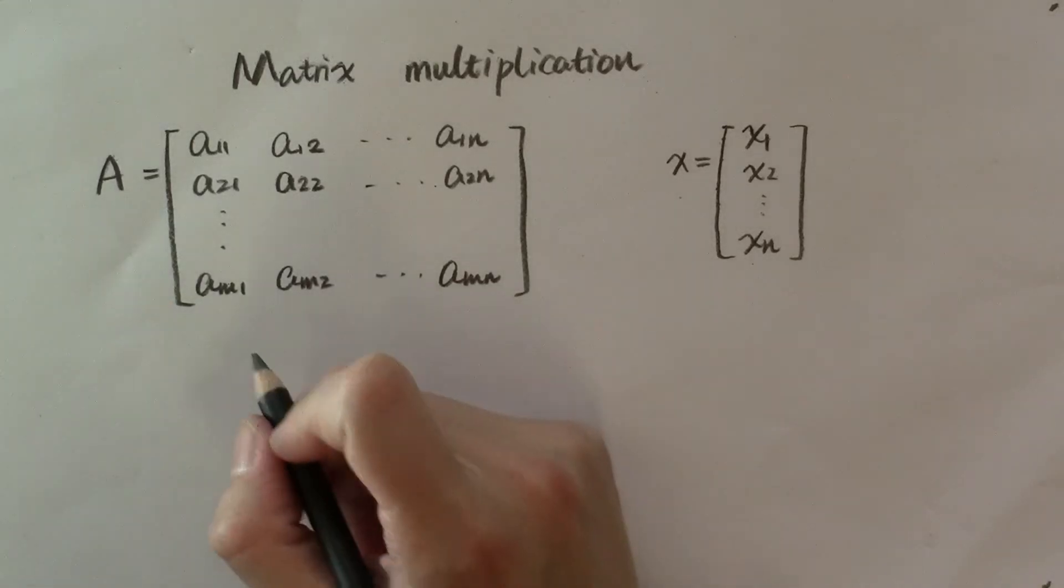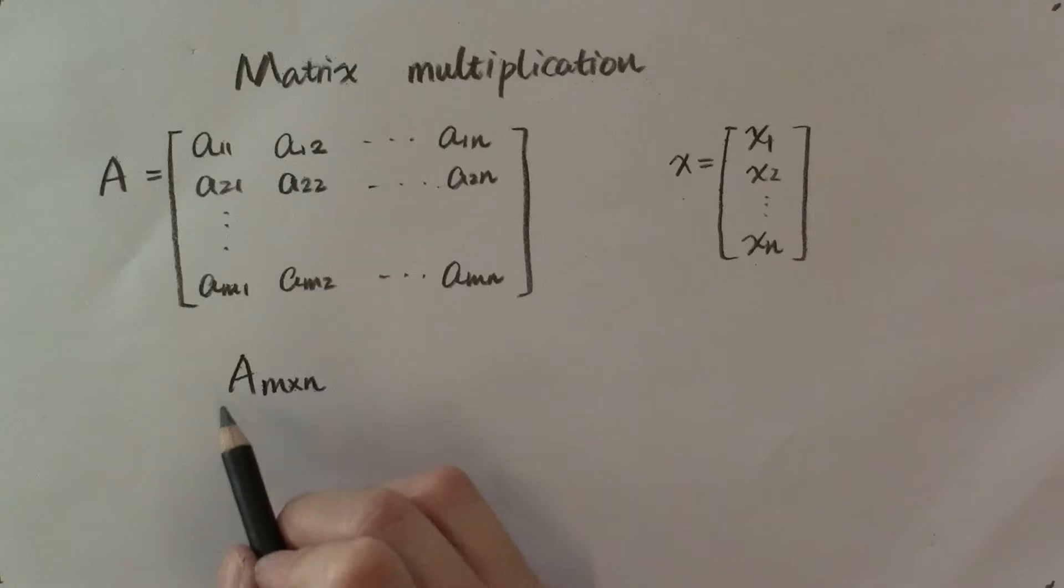Suppose we have matrix A, and its dimension is m by n. Here's a notation we often use to specify the dimension of a matrix. We write down its dimension on the lower right corner of this letter that represents the matrix.